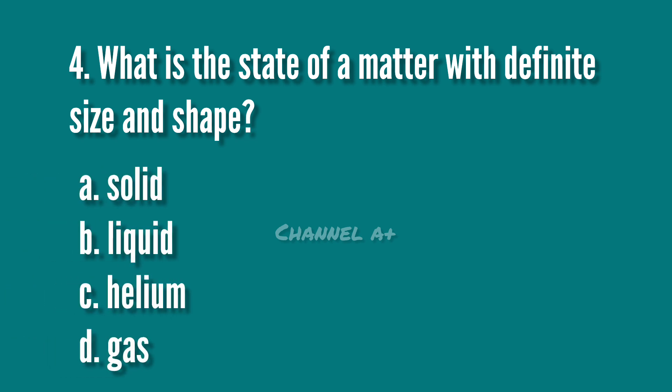What is the state of matter with definite size and shape? A. Solid. B. Liquid. C. Helium. D. Gas. The answer is A. Solid.